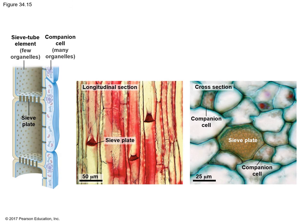If we look to the left, we will be looking at the sieve tube element. Adjacent to the sieve tube element will be the companion cells with many organelles. If we look closely, you can see small perforations or holes along the sieve tube element. Here we see larger pores, which is the connection of the sieve plate — this is where one sieve tube element connects to another through the sieve plate. We can also see the sieve plates in a longitudinal section connecting one cell to another, and in a cross section we can see the companion cells directly adjacent to the sieve plates.